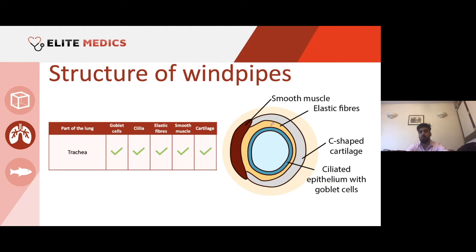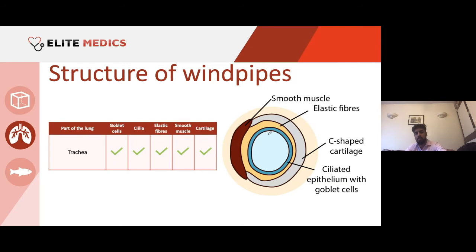We then have elastic fibres — shown in yellow. We've got the smooth muscle, which helps to contract or relax: when contracted it narrows the airways, and when it relaxes it widens the airways. Then we have our ciliated epithelium, containing ciliated cells and goblet cells.